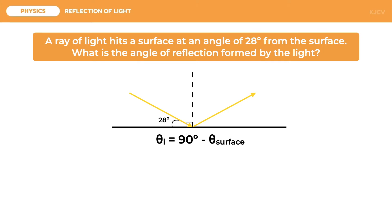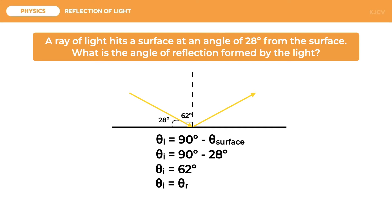Plugging in the values, we have 90 degrees minus 28 degrees, which gives us 62 degrees. Following the law of reflection, the angle of reflection should also be 62 degrees. This problem should give you a better understanding of reflection under geometric optics, as we have used rays and angle measurements to compute for the angle of reflection of light.